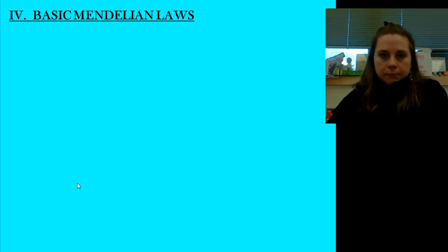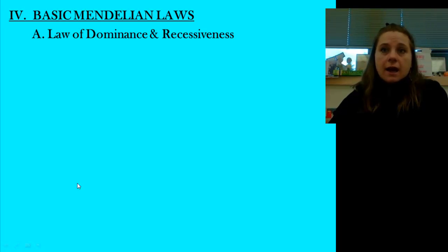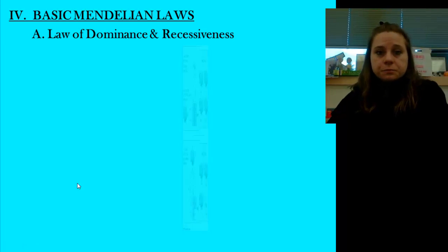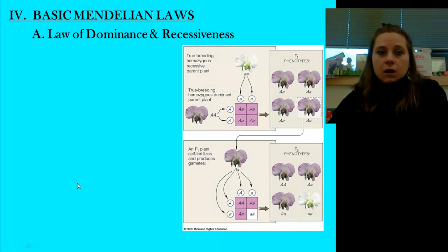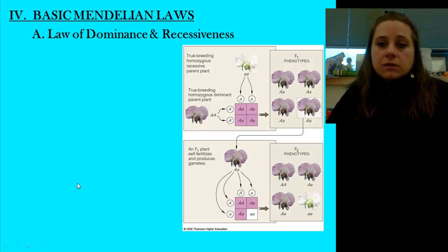Last slide, basic Mendelian laws. First one, law of dominant recessiveness. This as I mentioned was the first thing that Mendel really gave us and this is where we're going to begin our process of understanding how to actually do genetic crosses, which will be part of a series of what I'm going to call mini vodcasts. Each one will represent a different type of inheritance pattern and crosses.